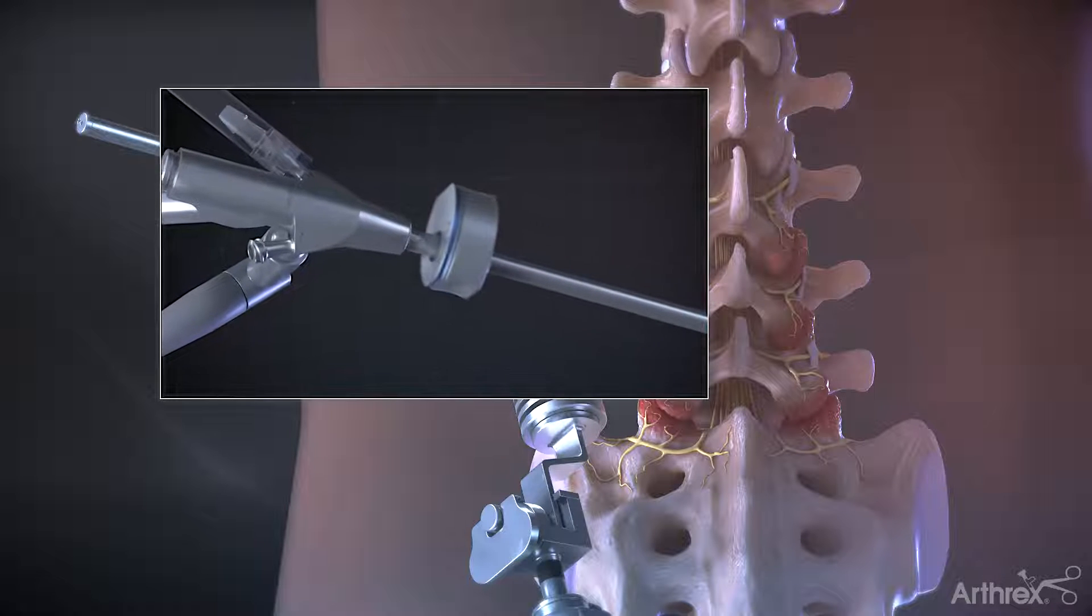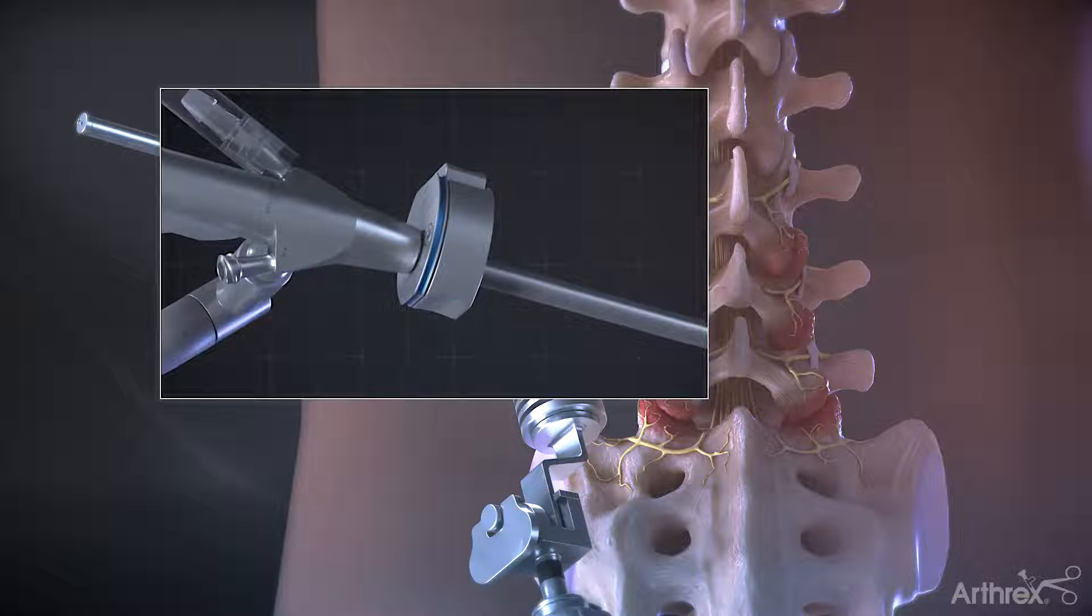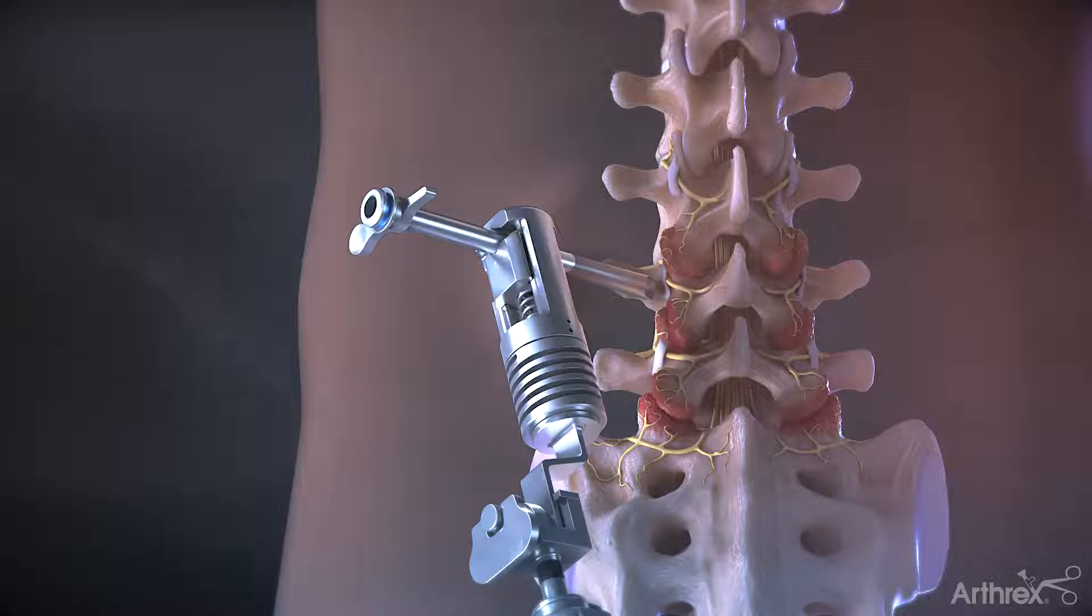Attach a depth stop to the endoscope to maintain the depth within the cannula. Remove the switching stick and insert the endoscope.